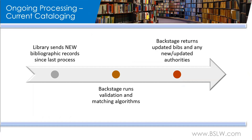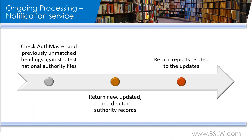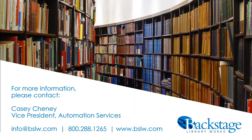Our final ongoing core service is our notification service. With this service, we periodically check the auth master we have on file for you against the national databases for updated authority records. We return any new, updated, and deleted authority records and their corresponding reports. If you are utilizing our base file and current cataloging service, we also check your previously unmatched headings to see if any authority records have since been created. I do hope that this brief presentation has helped answer some of your initial questions regarding our core authority control services. Please feel free to contact me with any questions, and keep an eye out for additional videos. If you have suggestions for other topics you'd like to see covered, please do get in touch. Thank you very much.